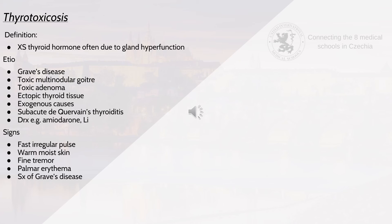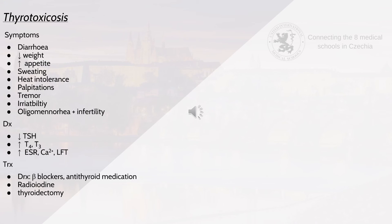Signs of thyrotoxicosis include fast irregular pulse, warm moist skin, fine tremors, palmar erythema, and signs of Graves' disease such as exophthalmos, pretibial myxoedema — oedematous swelling above the lateral malleoli — thyroid acropachy — clubbing, painful finger and toe swelling and periosteal reaction in the limb bones. Other symptoms include diarrhoea, decreased weight, increased appetite, sweating, heat intolerance, palpitations, tremor, irritability, oligomenorrhoea and infertility. Diagnosis shows decreased TSH, increased T4, T3, ESR, calcium and liver function tests. Treatment includes beta blockers or antithyroid medications, thyroidectomy or radioiodine.